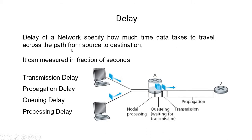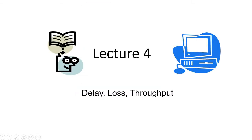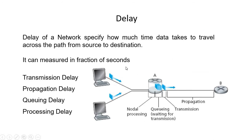Delay in a network specifies how much time data takes to travel across the path from source to destination. For example, when a client sends data towards a server, the client is the sender and the server is the receiver. The time taken for data to travel from source to destination is known as delay. It can be measured in fractions of seconds. Just like travelling from Ahmedabad to Mumbai takes a certain amount of time, whenever data travels from one place to another, that time is known as delay.